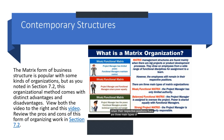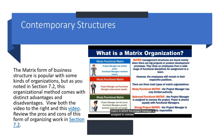There are three main types of matrix organizations. One: weak functional matrix, in which the project manager has only limited authority. Two: balanced functional matrix, in which the project manager is assigned to oversee the project and power is shared equally with functional managers. And three: strong project matrix, in which the project manager is primarily responsible.